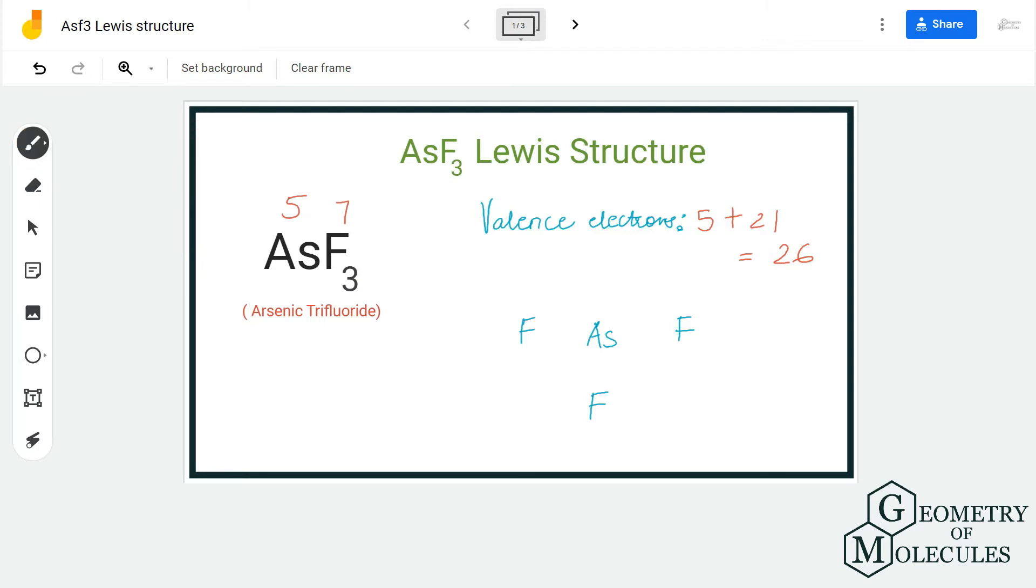Arsenic will take the central position and fluorine atoms will be arranged around it, as fluorine atoms are more electronegative than the arsenic atom. Once you have done that, place a pair of electrons between each fluorine and arsenic atom to show